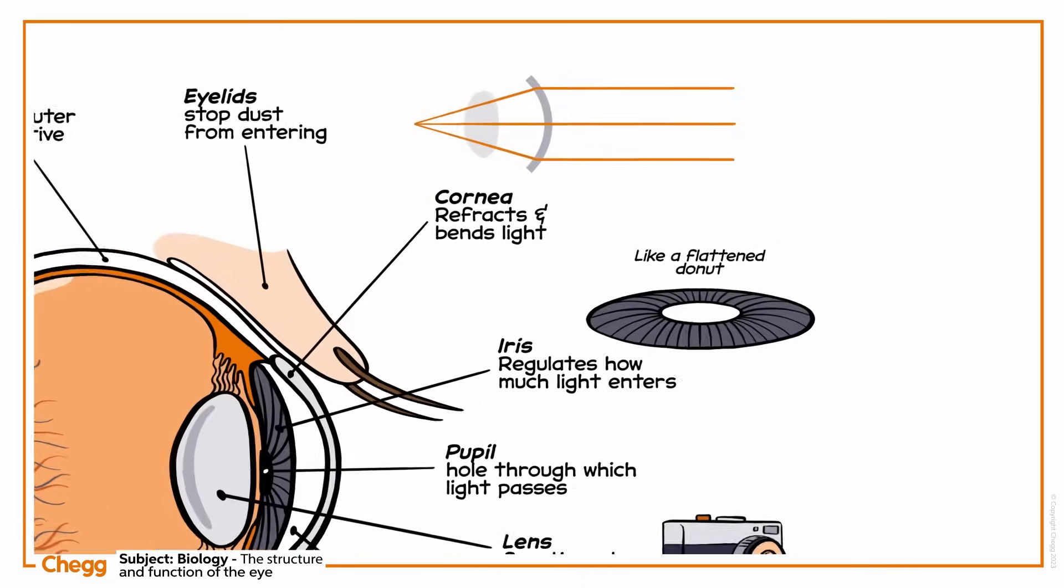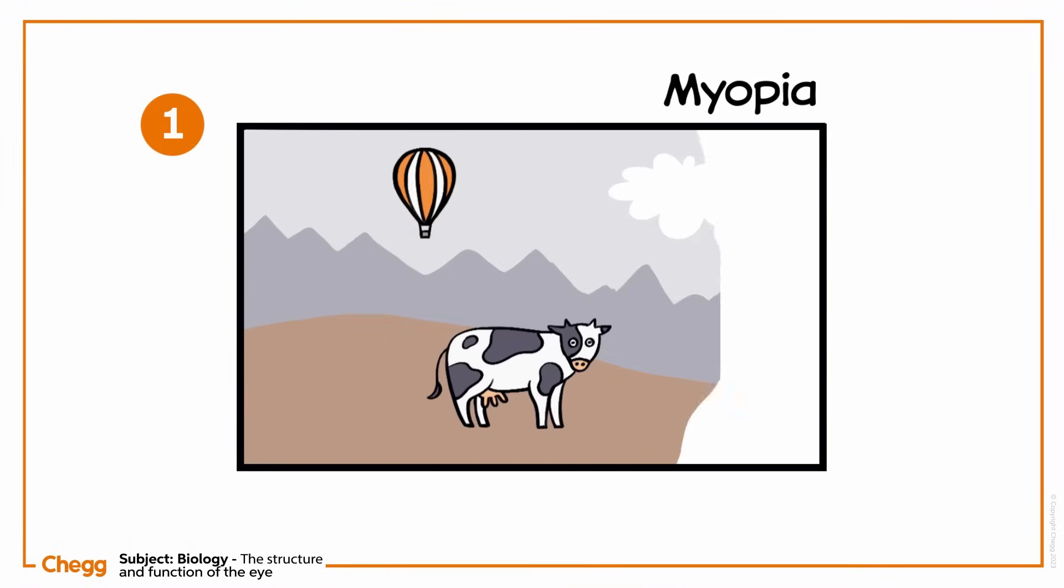The eye is complex and sometimes things go wrong. Myopia, also known as nearsightedness, is a common condition caused by light rays converging in front of the retina. So distant objects appear out of focus.